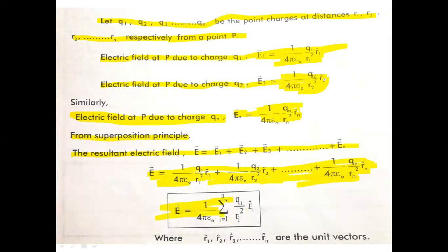Substituting all values: E equals 1 over 4πε₀ times [Q1/R1² R1̂ + ... + QN/RN² RN̂]. We can write this compactly using summation notation: E equals 1 over 4πε₀ times the summation from i equals 1 to N of Qi divided by Ri² times Rî, where i runs from 1 to N.